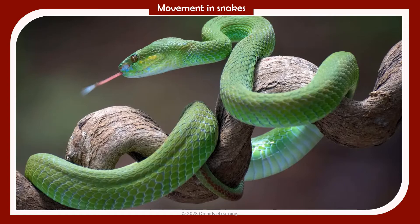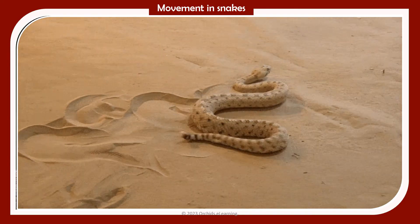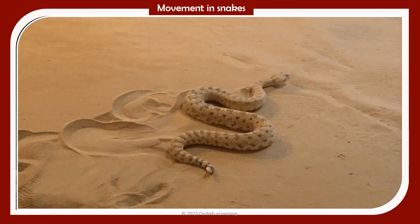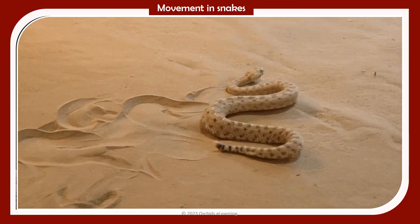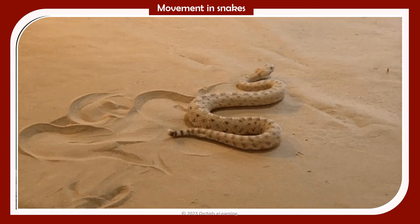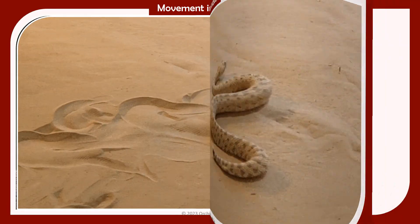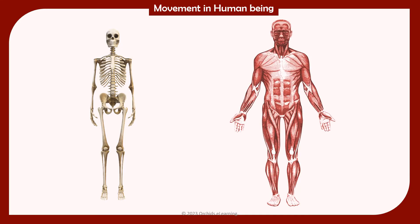Movement in snakes: Snakes do not have limbs. They move by crawling on their bellies. They have scales that cover their bodies and help them to crawl. Most snakes move in a wave-like manner. Their flexible backbones help them in this movement.